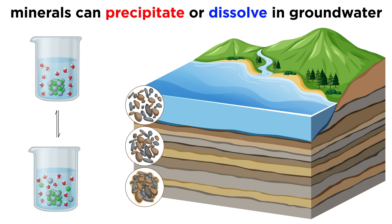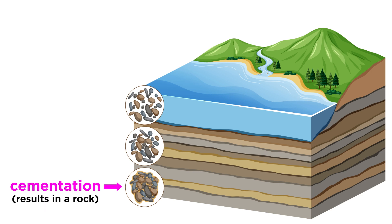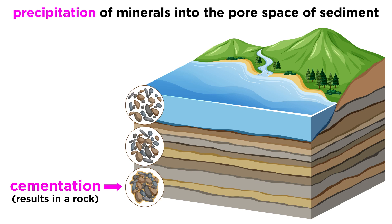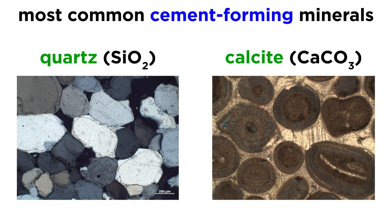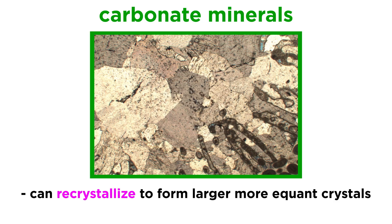The chemical changes that occur during diagenesis generally involve either precipitating or dissolving minerals with groundwater. The most important chemical change during diagenesis is cementation, which involves the precipitation of minerals into the pore space of a body of sediment, transforming it into a rock. The most common cement-forming minerals are quartz and calcite. Some sediments, especially those made of carbonate minerals, will recrystallize during diagenesis, turning many small irregular crystals into larger, more equant ones.